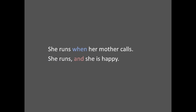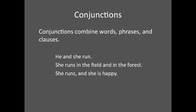You may have noticed that in both examples, the clauses were separated by the words 'when' and 'and.' These are called conjunctions. Conjunctions combine words, phrases, and clauses. When you see 'and,' you need to think if it is joining two words — 'He and she run' — or two phrases — 'She runs in the field and in the forest' — or two clauses — 'She runs, and she is happy.'